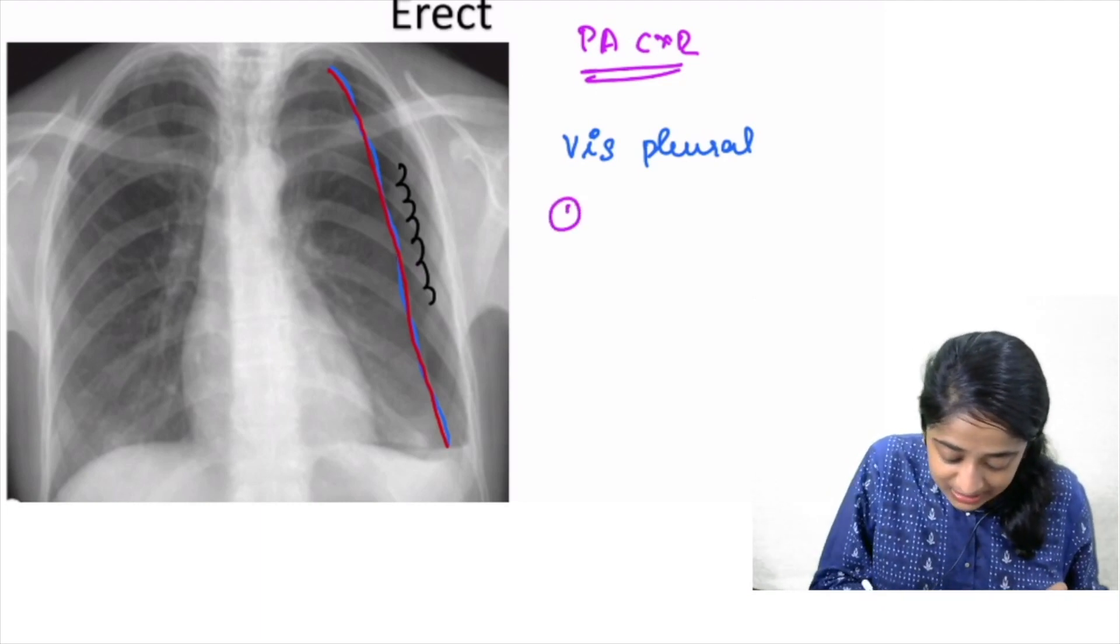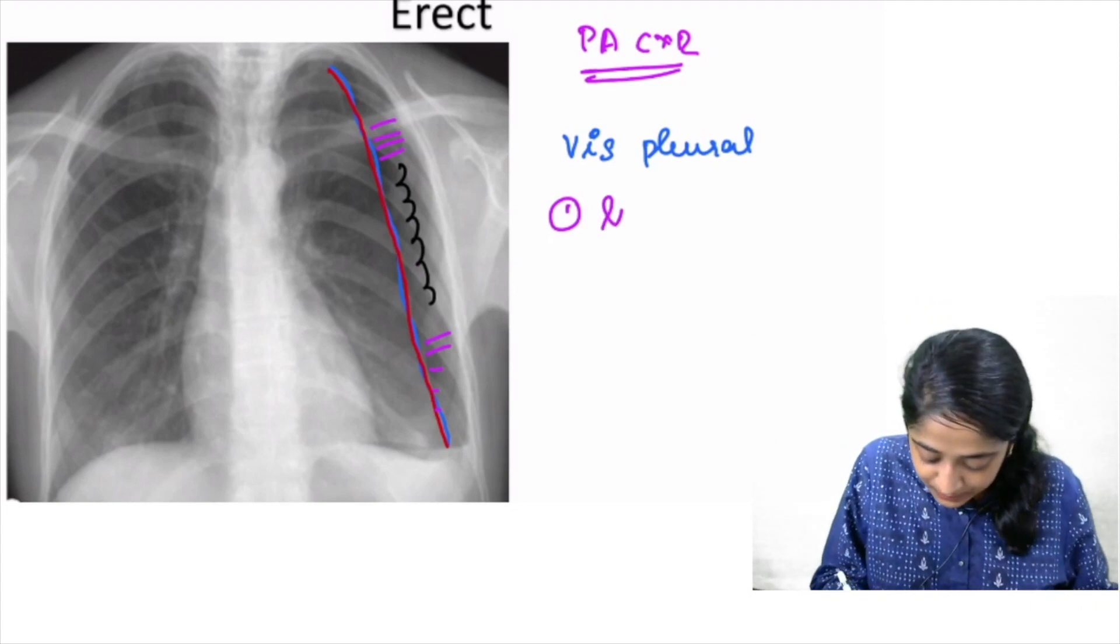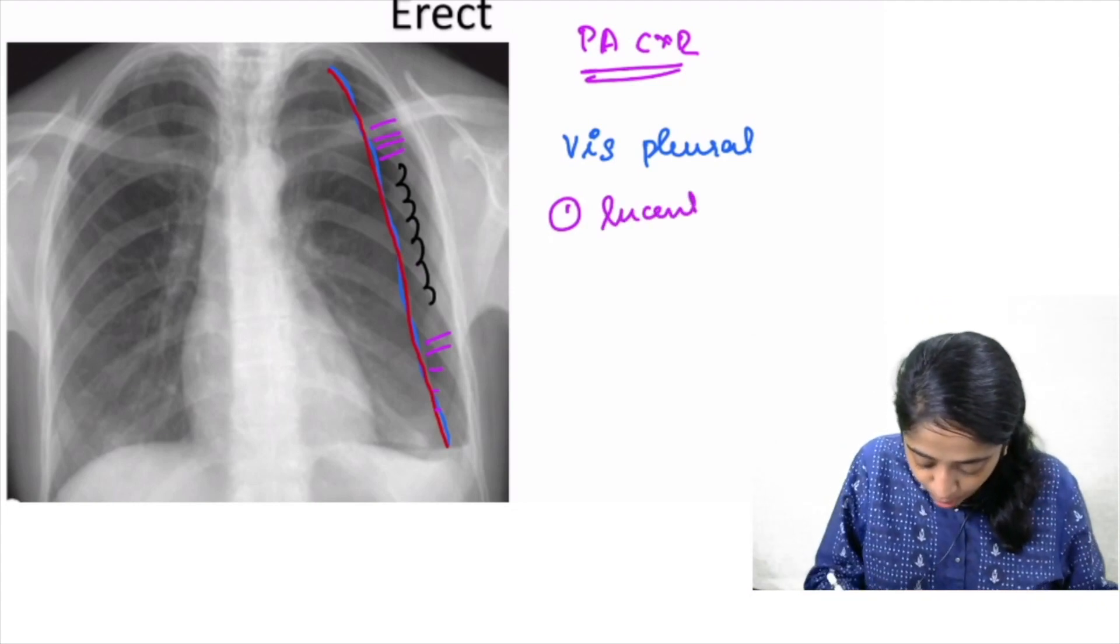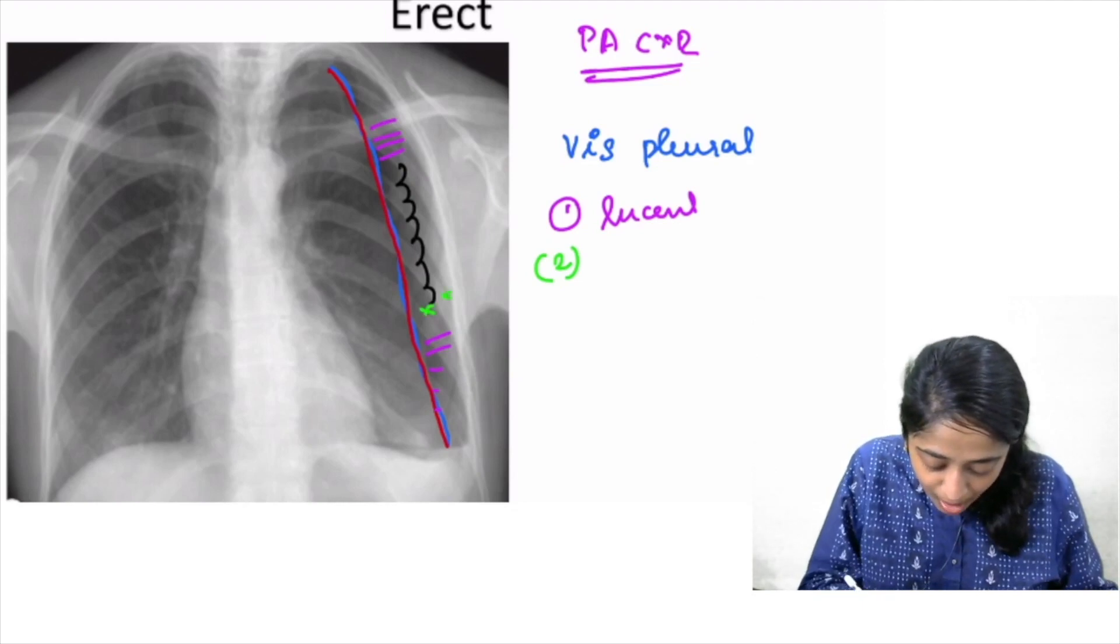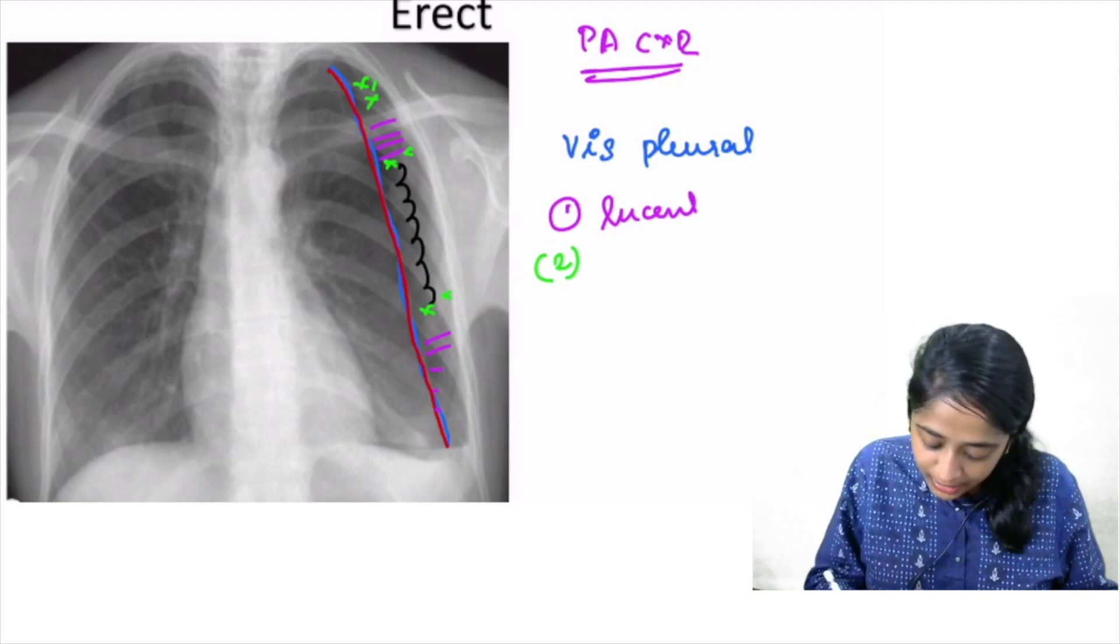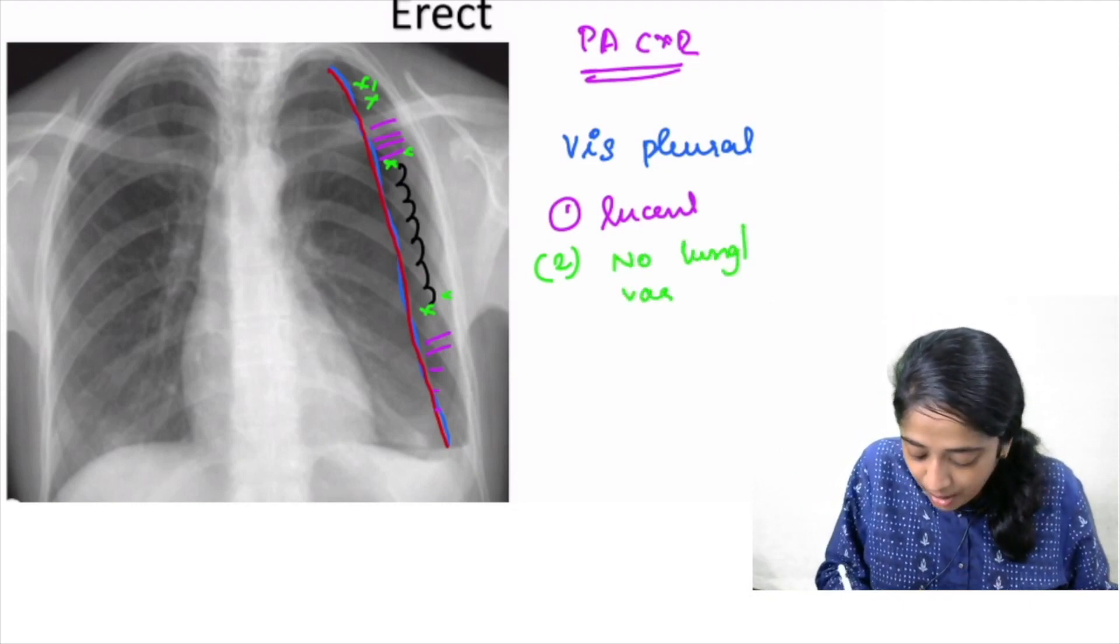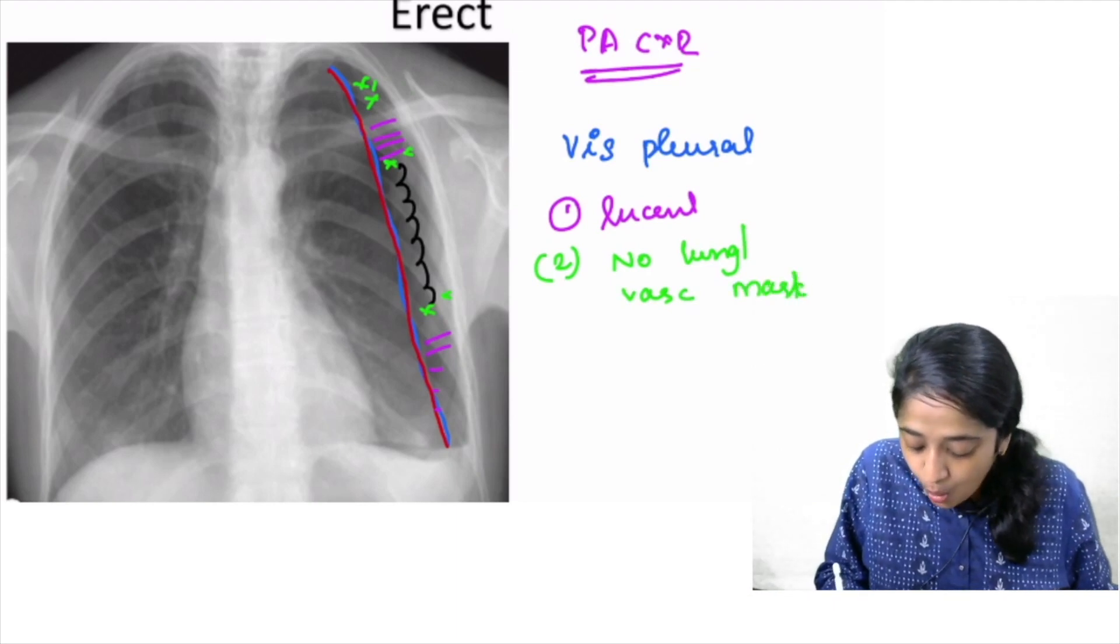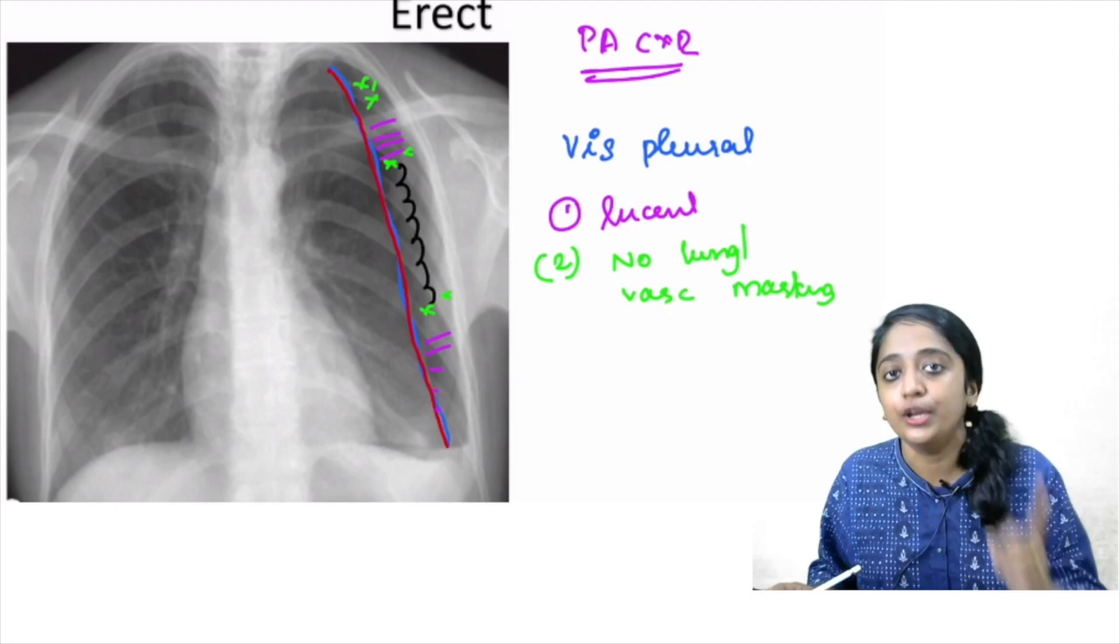One is that distal to that, the lung is much more lucent. And secondly, more importantly, what do you have to see is that there are no lung markings distal to this displaced white pleural line. Very important. No lung or vascular markings distal to it. Only when these three things are present together, you can call it pneumothorax.